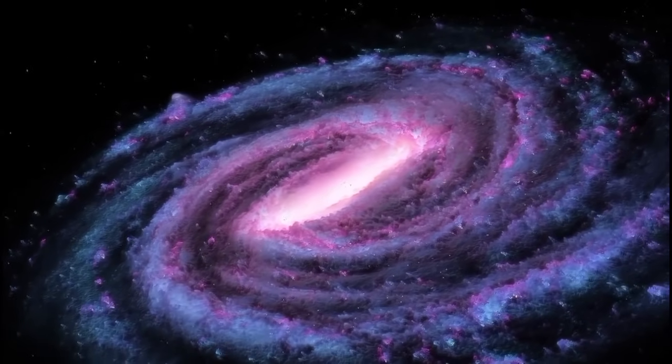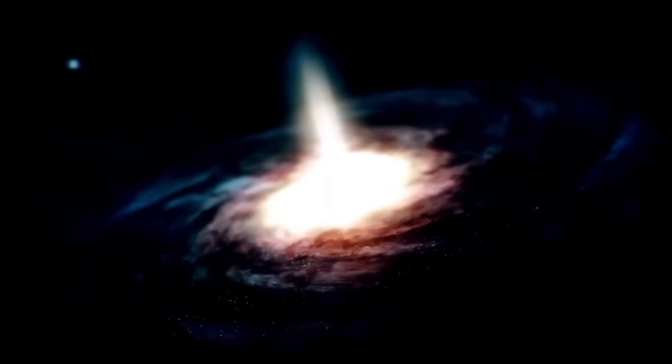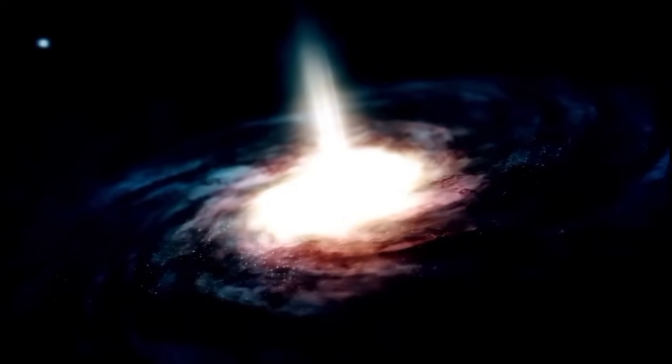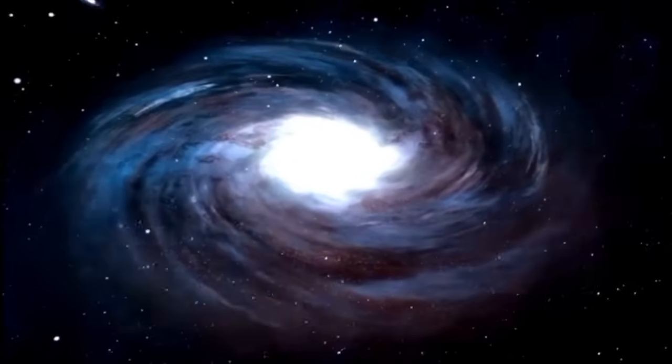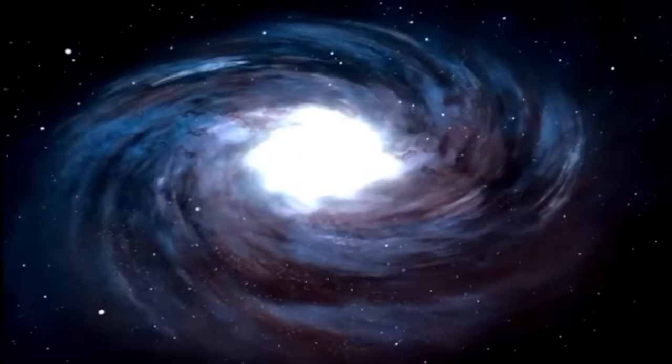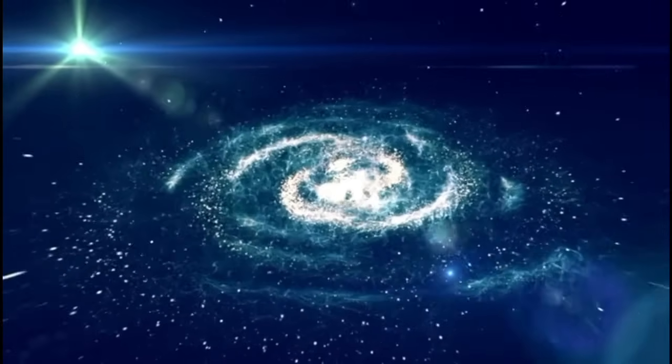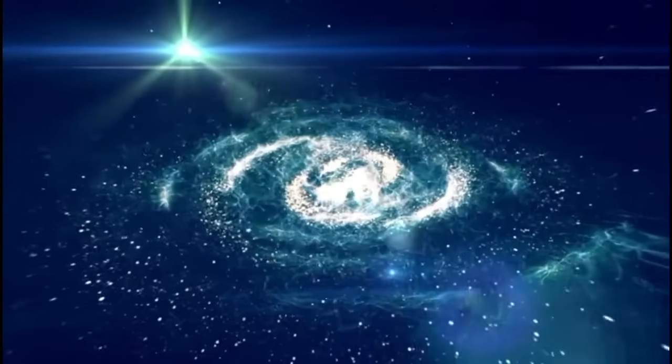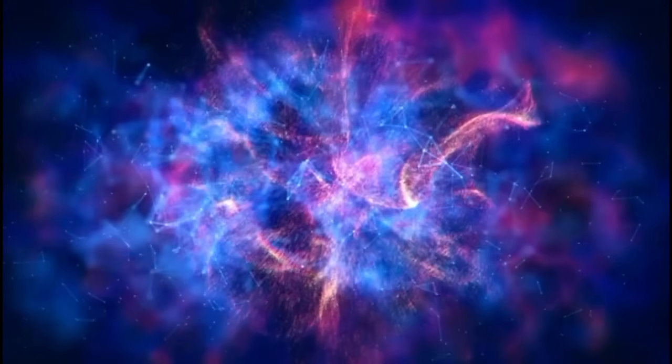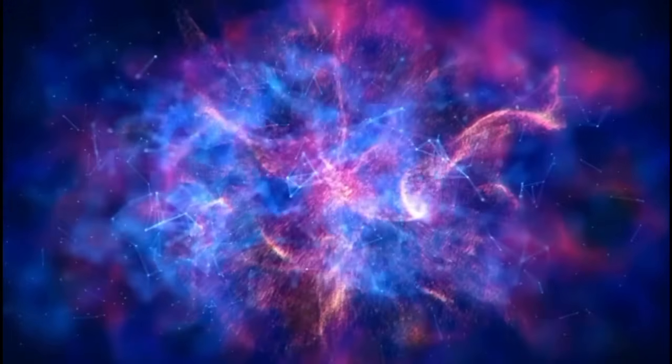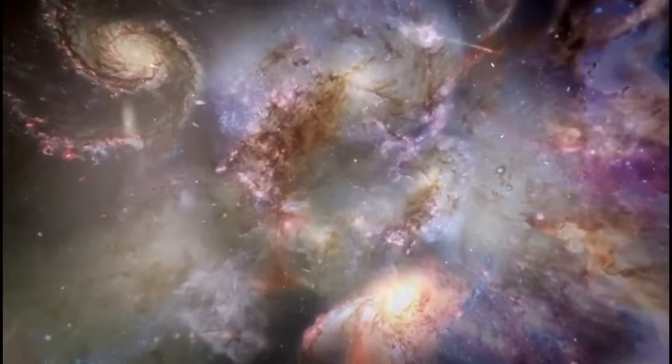Meanwhile, scientists are making fascinating observations about our own Milky Way. For example, recent data has shown that stars on the outer edges of our galaxy move much more slowly than stars in other galaxies. One theory is that the Milky Way contains less dark matter than we thought. Dark matter, though invisible, plays a major role in how gravity behaves on a cosmic scale. There is also the possibility that our understanding of how dark matter is distributed across the universe is flawed.